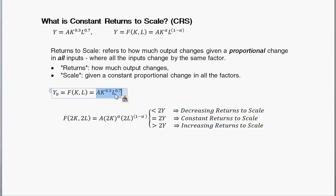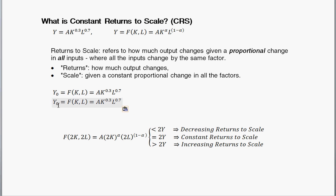This production function is a parameterized Cobb-Douglas production function. We're going to call that initial level of output Y₀. You can see there's a certain amount of capital and a certain amount of labor. Now let's suppose we've doubled the inputs. I'm going to call this a new level of output Y₁. I've doubled capital, putting 2K there, and doubled labor, putting 2L there.